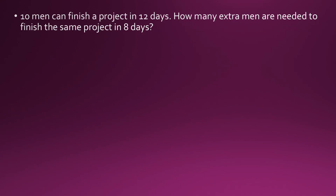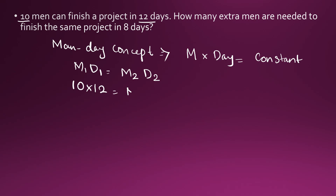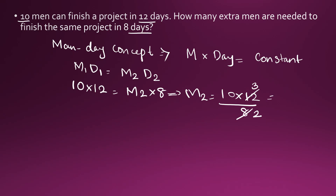10 men can finish a project in 12 days. How many extra men are needed to finish the same project in 8 days? Here we will use the man-day concept: man into day is constant. Therefore M1 × D1 = M2 × D2, where M1 is 10 and D1 is 12, equal to M2 into D2 which is 8 days. So M2 can be found as 10 into 12 divided by 8, which is 15.